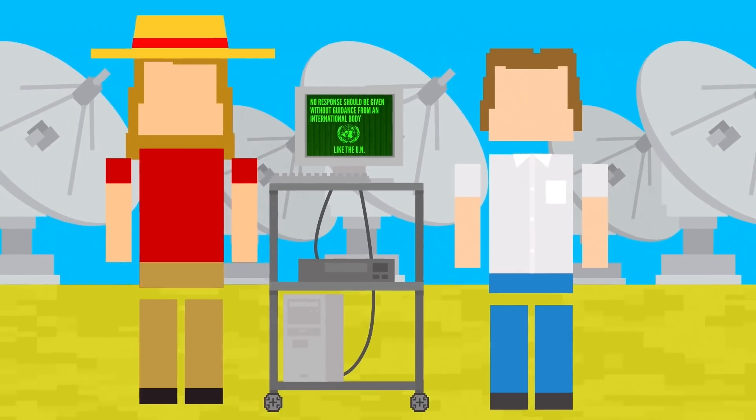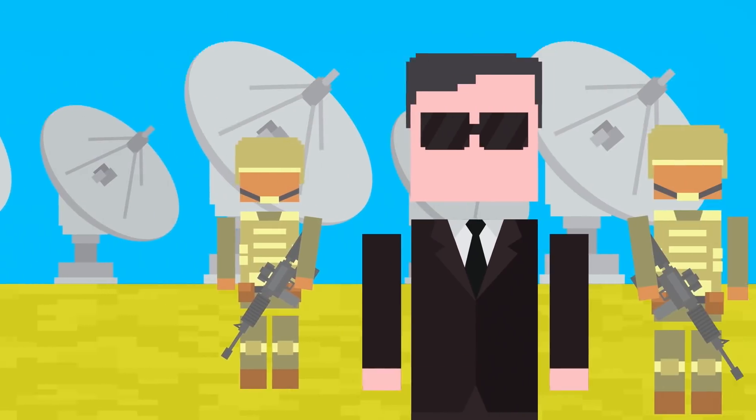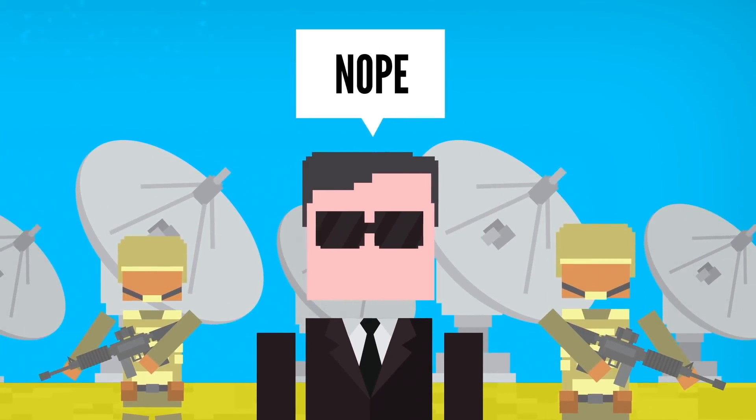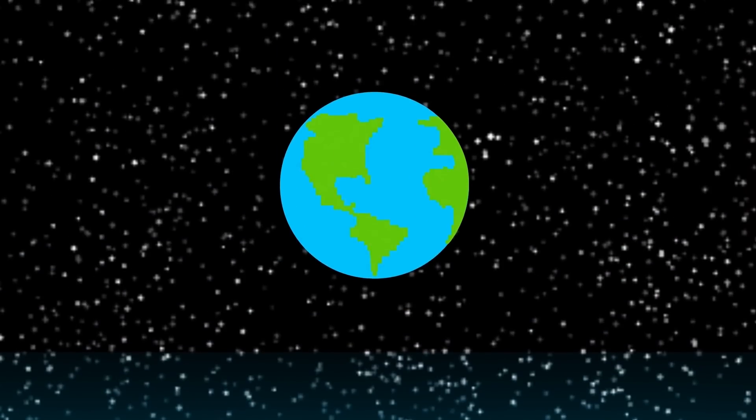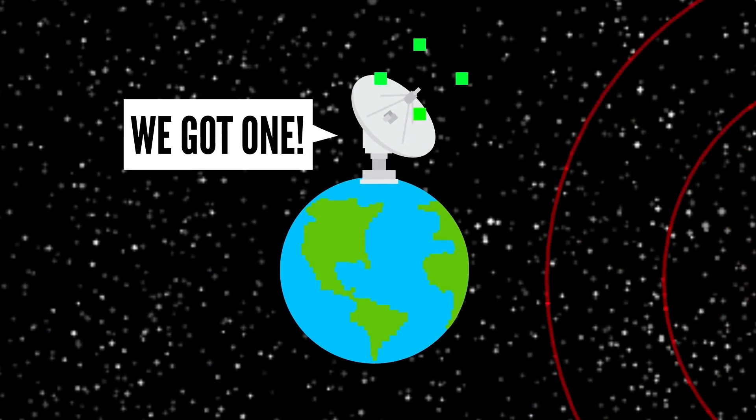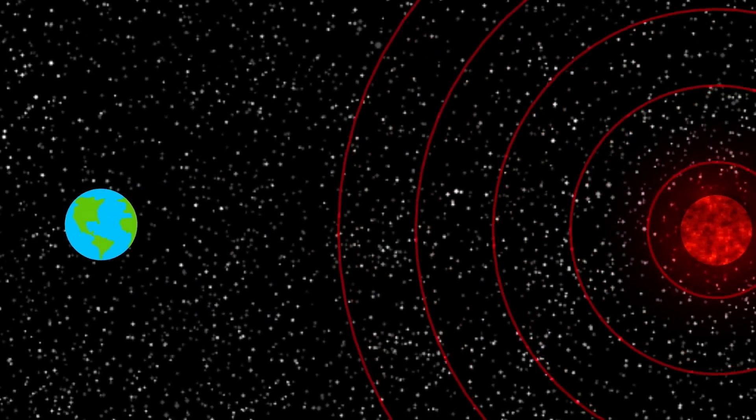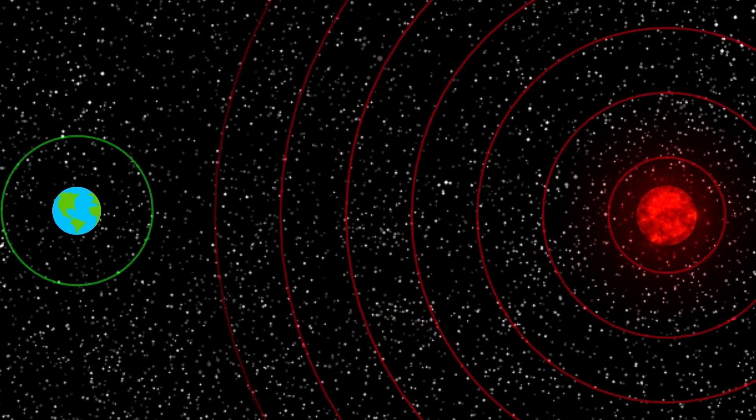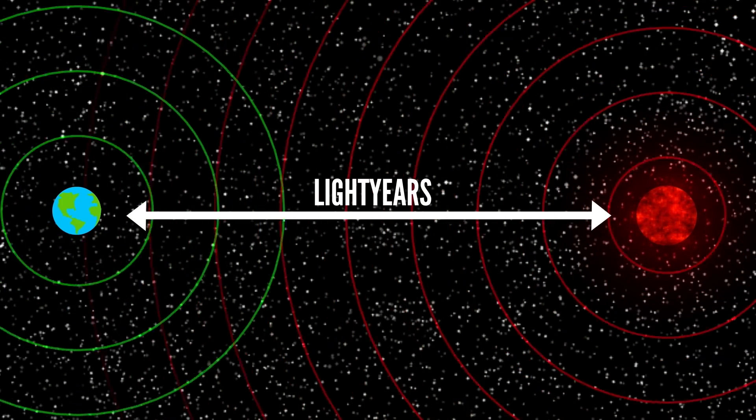But other than that, there's no official government-led plan in place for when we make contact. Though it might not make much of a difference. If contact is made when we receive a message through radio signals from distant stars, it would take centuries for them to get our response anyways. So we could take our time in figuring out what to say and how to say it.